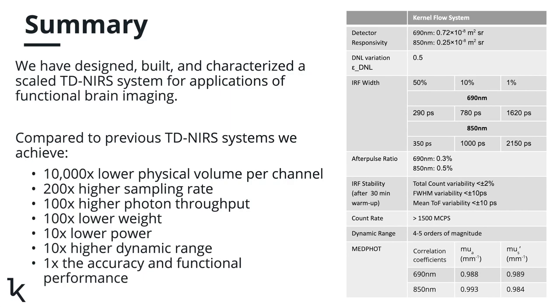In summary, over the last three years, we have developed a completely overhauled TD-fNIRS system. Compared to previously reported systems, we have reduced the physical volume per channel by four orders of magnitude, achieved nearly 200 times higher sampling rate, two orders of magnitude higher photon throughput, ten times higher dynamic range, and significantly reduced the weight and power requirements of the system. We have achieved a level of integration that introduces the possibility of having wearable TD-fNIRS systems everywhere. In our push for deeper integration, we have also maintained the accuracy of optical property extraction and demonstrated functional brain activation. Thank you for your attention.